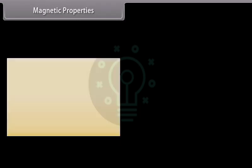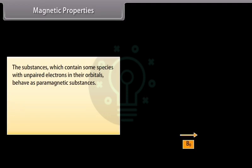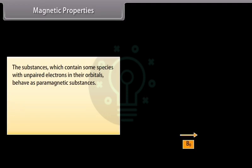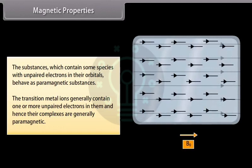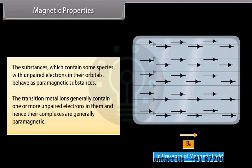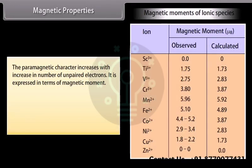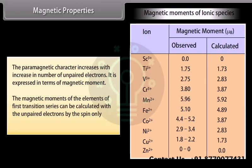Substances which contain species with unpaired electrons in their orbitals behave as paramagnetic substances. Transition metal ions generally contain one or more unpaired electrons and hence their complexes are generally paramagnetic. The paramagnetic character increases with increase in the number of unpaired electrons. It is expressed in terms of magnetic moment, and the magnetic moments of elements of the first transition series can be calculated using the spin-only formula.